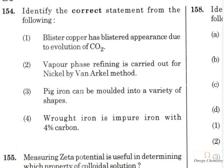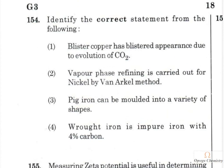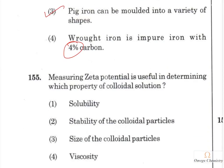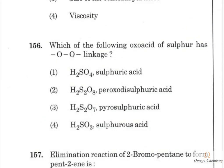Question 154: Blister copper's blistered appearance is due to SO₂ evolution (not CO₂ — that statement is wrong). Vapor phase refining of nickel is by Mond's process (correct). Question 155: Measuring zeta potential is useful in determining the stability of colloidal particles. Question 156: The oxoacid of sulfur with an oxygen-oxygen linkage (peroxy linkage) is identified by the prefix 'peroxo' in option 2.